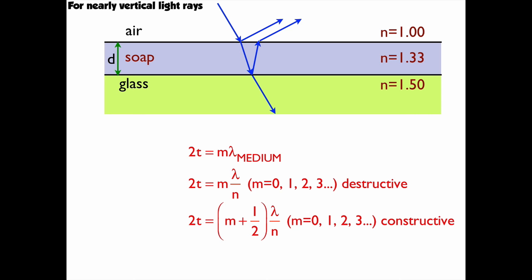But when it comes in, the first one, it's going from air to soap. So from low to high, that's going to be a 180 degree phase change. And then when it goes from soap to glass, it does it again, from a lower index to a higher index. So I get a second 180 degree phase change. So now because I have two phase changes instead of just one, they essentially cancel each other out.